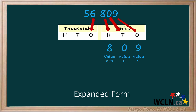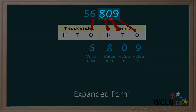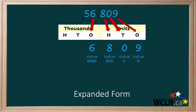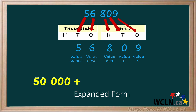The 6 is in the thousands place — 6 thousands has a value of 6,000. Notice there are three digits after the 6 in the number and three zeros after the 6 when giving its value. The 5 is in the ten-thousands place — 5 ten-thousands has a value of 50,000. Notice there are four digits after the 5 in the number and four zeros after the 5 when giving its value. To write in expanded form, we put the values together from largest to smallest in an addition equation, but we don't include any values of 0. We have 50,000 plus 6,000 plus 800 plus 9.